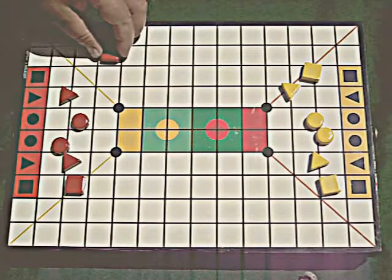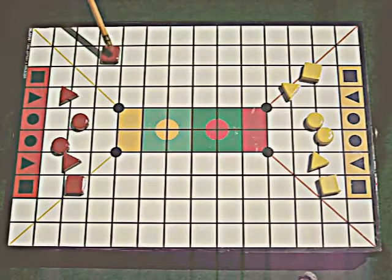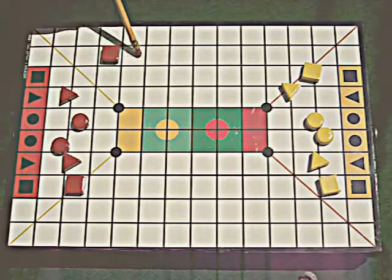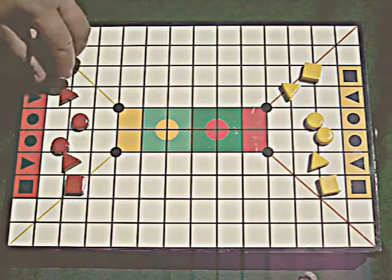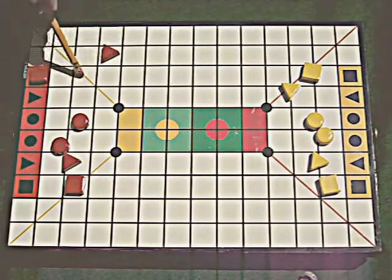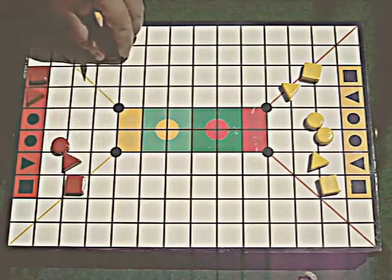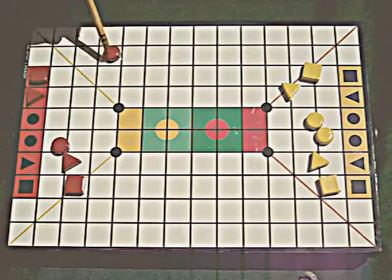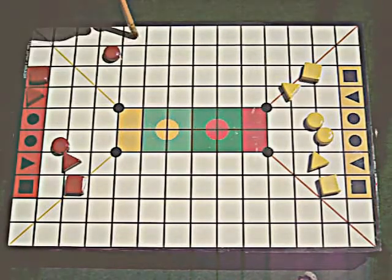First, I'll show you how the pieces move, and then we'll get to the fundamentals of the game. Squares move up, back, left, right only. Triangles move diagonally only. The circles move up, back, left, right, and diagonally.